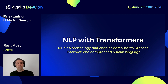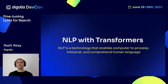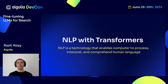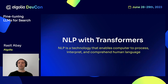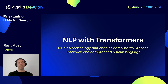Natural language processing with transformers — what is natural language processing? It is the technology that enables computers to process, understand, and interpret human language. Instead of just representing ones and zeros, now they represent those ones and zeros in the form of a language that we understand — coherent and meaningful. The architecture we will talk about today is transformers, which is the most successful, state-of-the-art approach for natural language processing tasks.